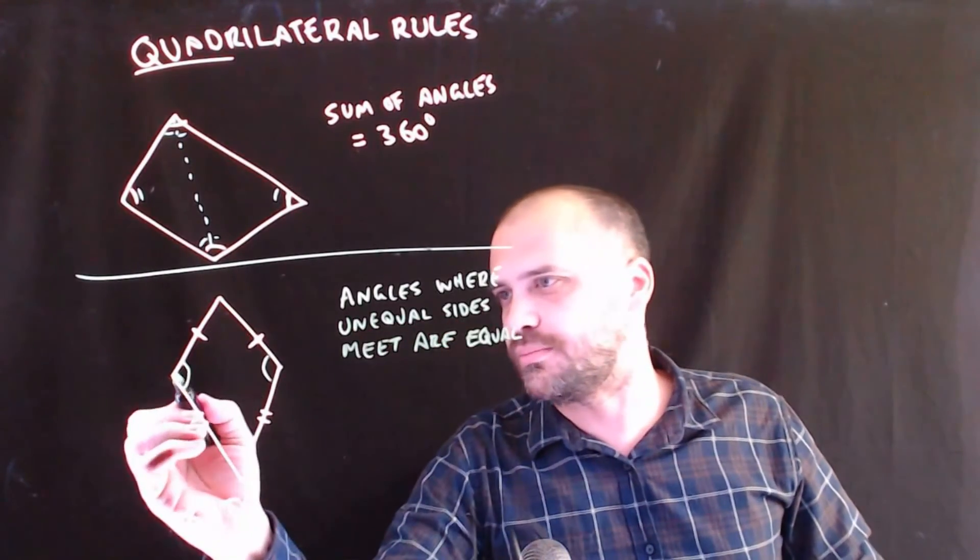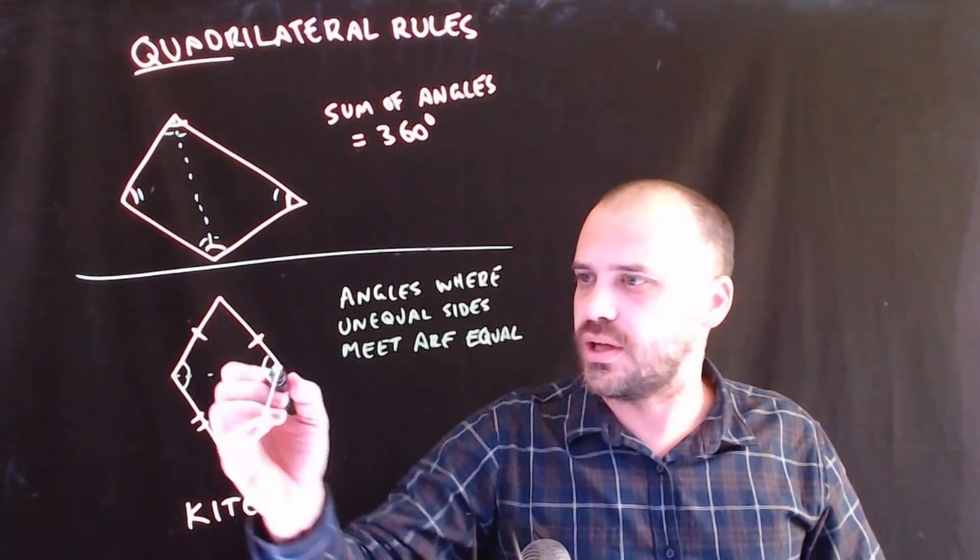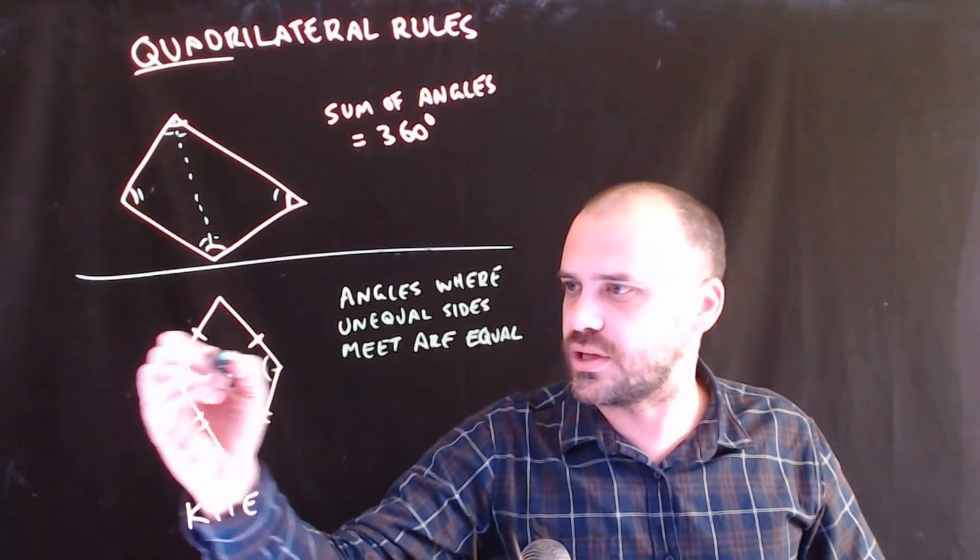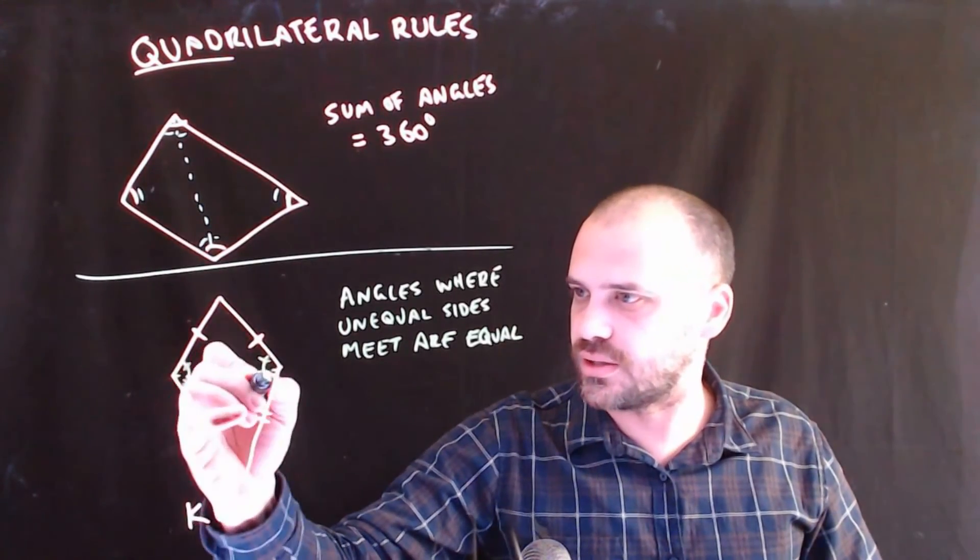A kite is made up of two triangles, two special triangles, two isosceles triangles. In an isosceles triangle, these angles are the same. In this isosceles triangle, these angles are the same.